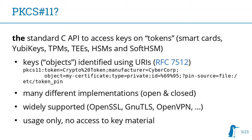On tokens you have keys — the spec calls them objects. Those are identified via URIs: they start with 'pkcs11:' and then have some sort of filter specification where the PKCS11 library searches for the correct key if you have several. This standard is implemented by basically all hardware security module vendors. There are OpenSSL engines for it, so there's pretty wide support. OpenSSL, GnuTLS, OpenVPN can use it to access keys on smart cards and TPMs. And the most important point: it's usage-only — you can't extract the key via this interface.